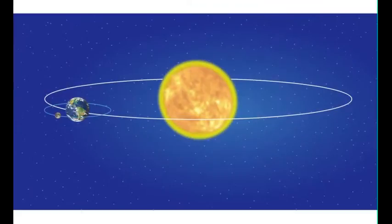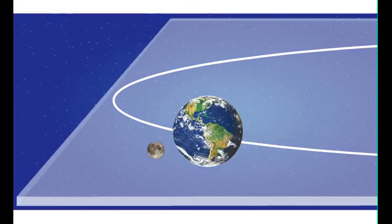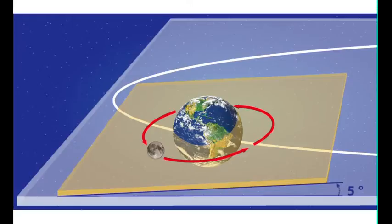One might expect that lunar and solar eclipses would occur every month as the moon orbits the earth. This does not happen because the moon's orbit is actually tilted by a little more than five degrees relative to the earth's orbit around the sun. It is rare that the moon is in the earth's shadow during a full moon, or between the earth and sun during a new moon.